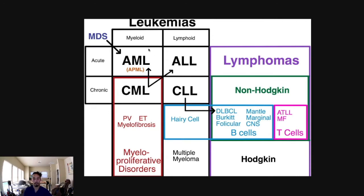You have acute myelogenous leukemia, which can be a manifestation of CML, chronic myelogenous leukemia, as well as the general heterogeneous myelodysplastic syndrome. Although many MDS or myelodysplastic syndromes can be indolent and present for 10, 15, 20 years, some acutely can manifest and become AML. So MDS can become AML, and also CML.